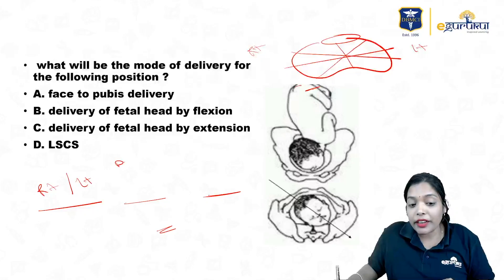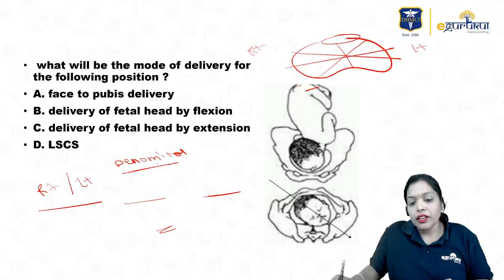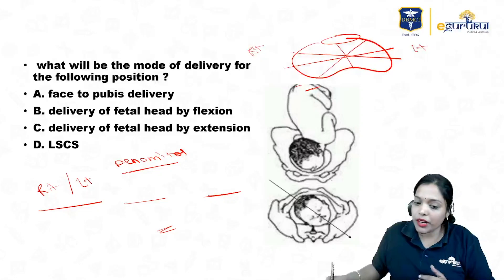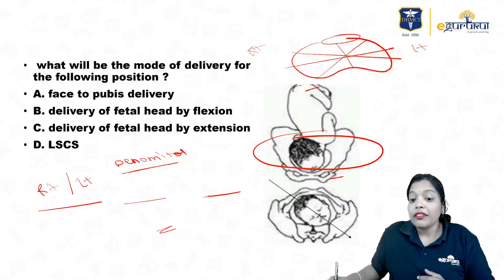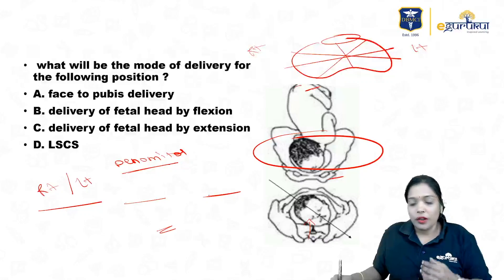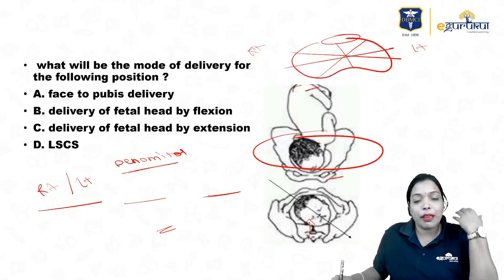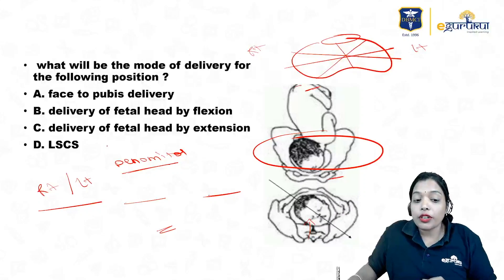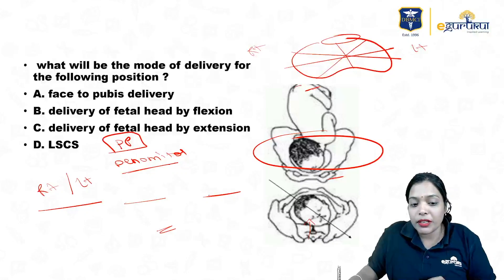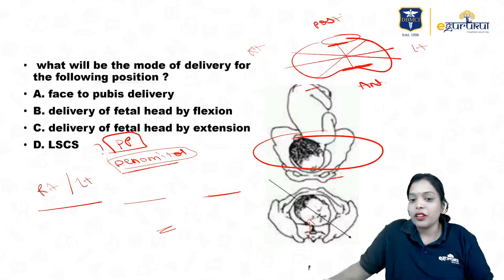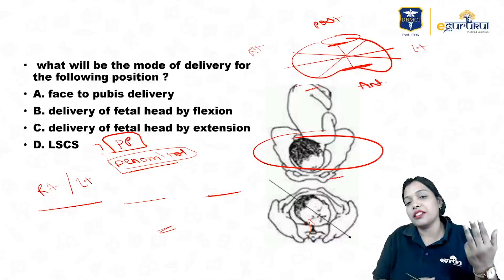Next you have to determine the denominator of the presenting part. First you should know what the presenting part is — the part of the fetus lying in the lower uterine segment is called the presentation. When I do a PV examination, whatever I palpate first is called the presenting part. On the presenting part you have a bony prominence to tell which side the baby's head is lying — that is called the denominator. If the denominator is facing towards the pubic symphysis, you call it anterior; if it is towards the sacral promontory, you call it posterior. To determine the position, divide things into three boxes.